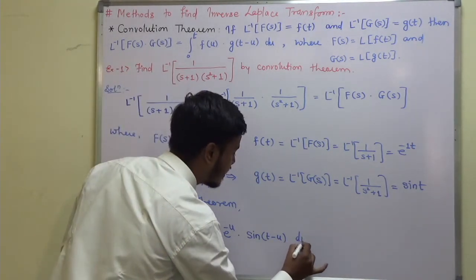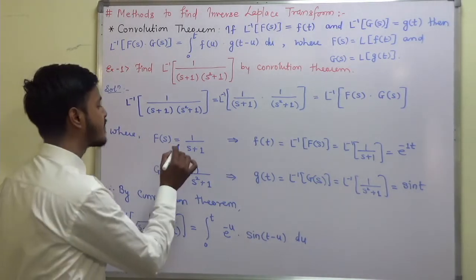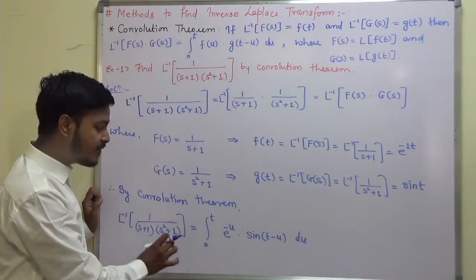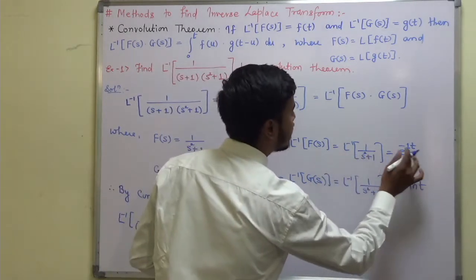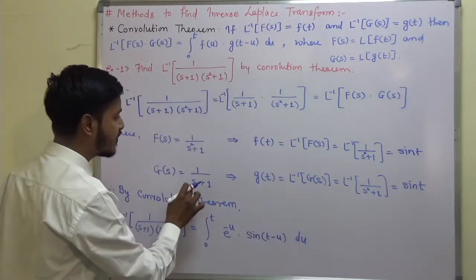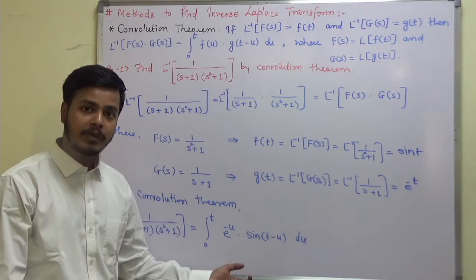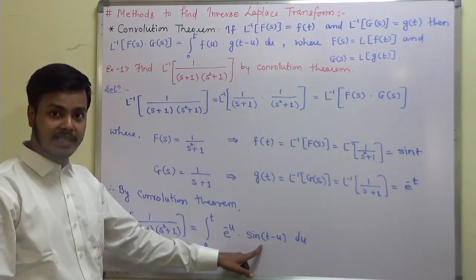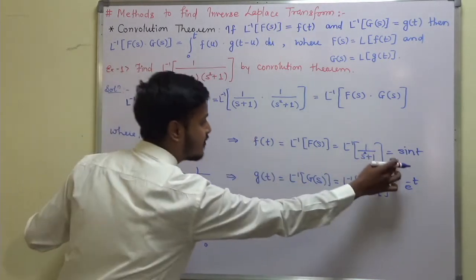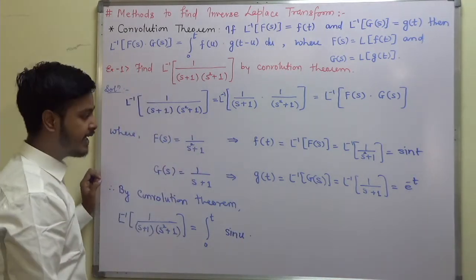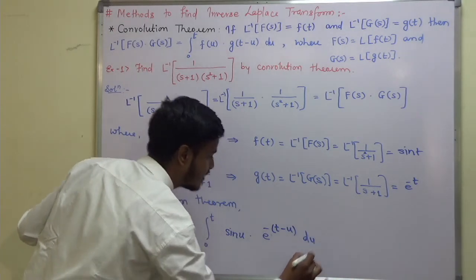However, this is not easy to integrate directly. What you can do is interchange the two functions — always take the easier function to be the g function. So I will reassign: f(s) = 1/(s²+1), giving f(t) = sin(t), and g(s) = 1/(s+1), giving g(t) = e^(−t). The integral then becomes the integral from 0 to t of sin(u)·e^(−(t−u)) du, which is much simpler.